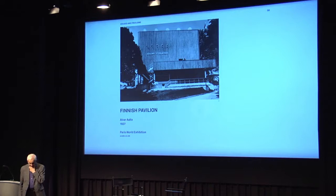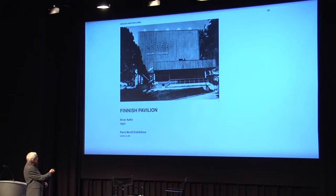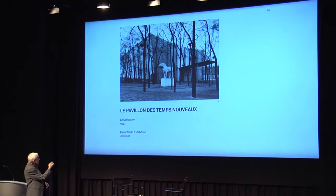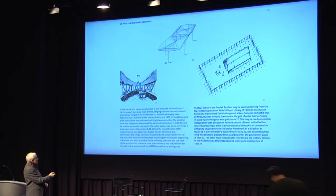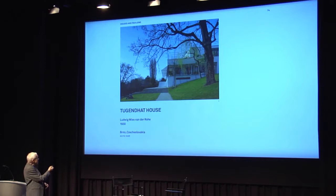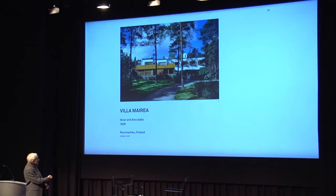That brings me to the end of the whole thing. Now the comparison of Aalto's 1937 Pavilion to Le Corbusier's Pavillon de Temps Nouveaux — I'm not going to go into it all because it's altogether too much. And then of course the Tugendhat House versus the Villa Mairea. Well, the Tugendhat is 1930, the Villa Mairea is '39. And the book goes on like that.